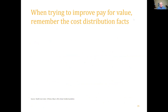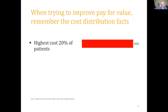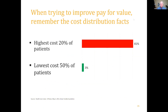It's important to remember the cost distribution: the highest-cost 20% of patients account for 81% of total cost. But the more important number — the lowest-cost 50% of patients represent only 3% of total cost. Many people trying to control costs design payment systems that deal with everybody, adding complexity, when a huge share of patients contribute almost nothing to total cost. If reducing costs is the goal, you have to focus on that 20% who drive 80% of spending.